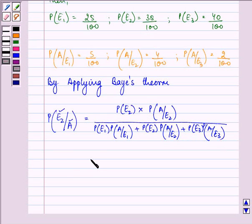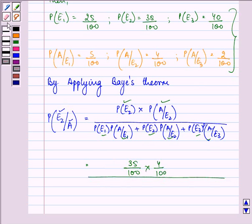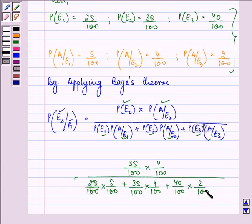Now we just need to substitute these values. So we have 35 upon 100 into 4 upon 100 in the numerator. The denominator is 25 upon 100 into 5 upon 100 plus 35 upon 100 into 4 upon 100 plus 40 upon 100 into 2 upon 100.